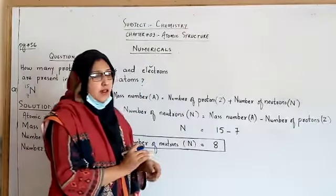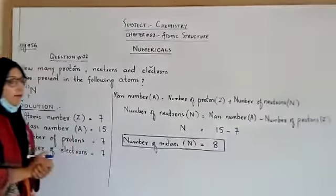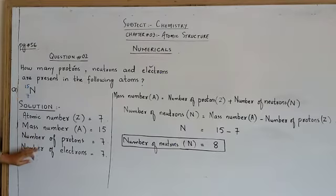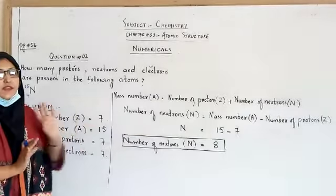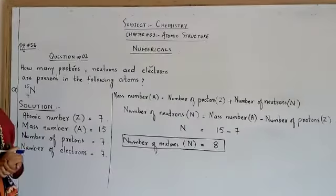By putting in the values, we can easily find out the number of neutrons. This way we can solve B, C, and D as well.